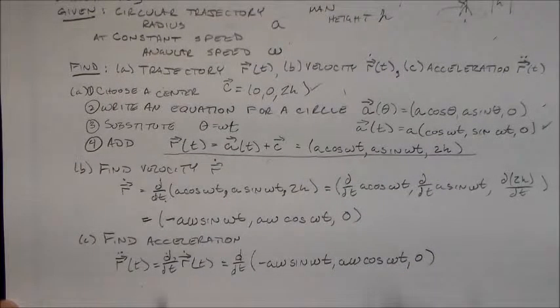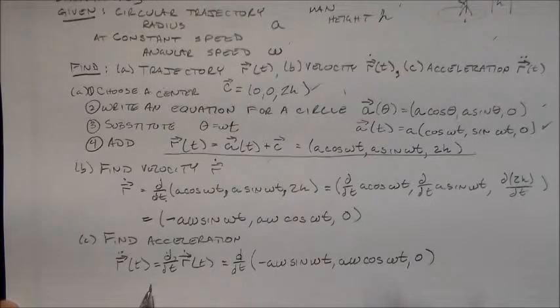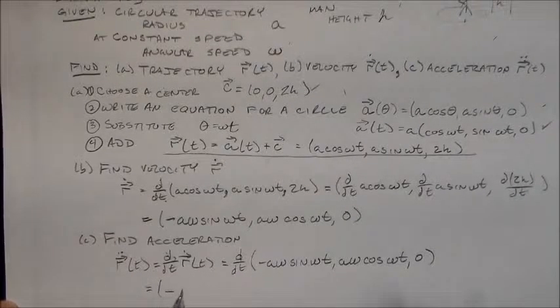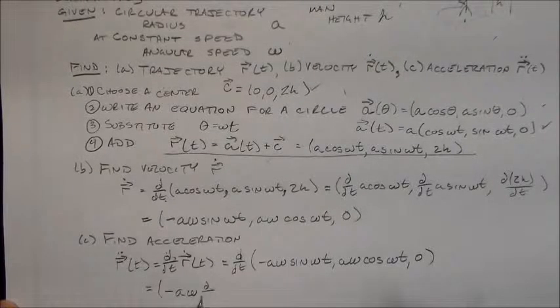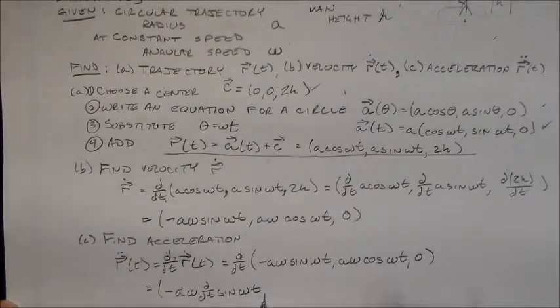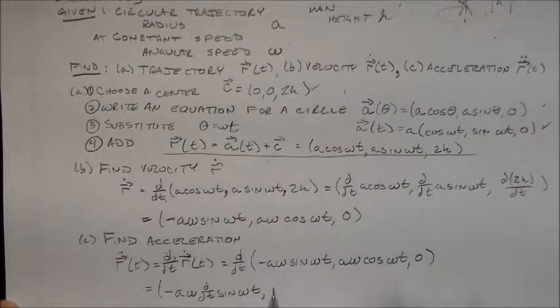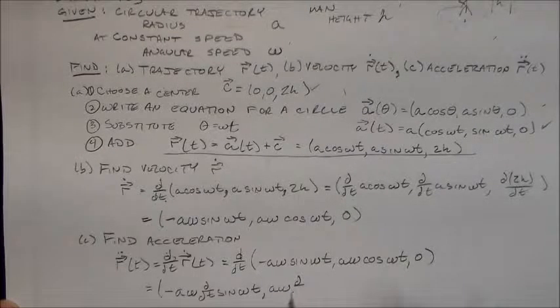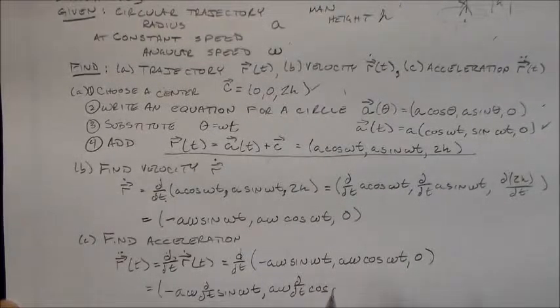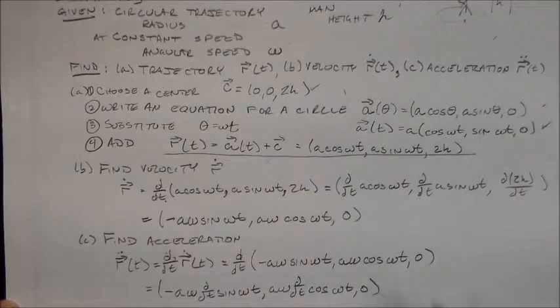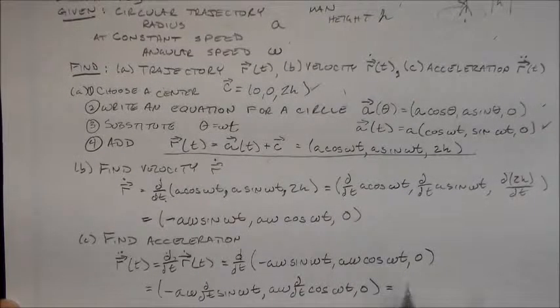And that is equal to, let's see, d dt, minus a omega sine omega t, a omega cosine omega t, and a zero, all right? And again, we can distribute. Let's see, distribute all that out.